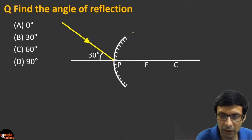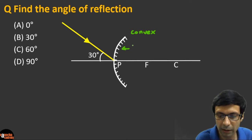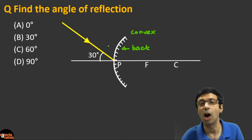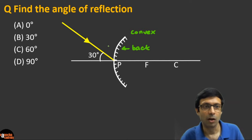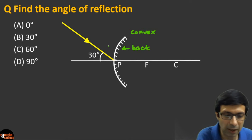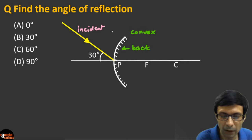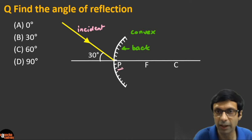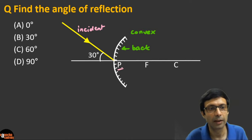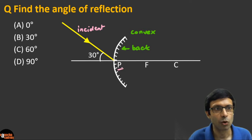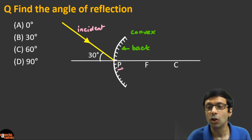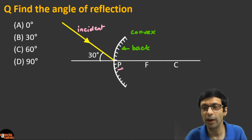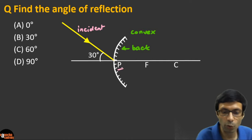First, what type of mirror is this? As you can see, this is a convex mirror — the back non-reflecting side is visible, and the reflecting side is bulging outwards. Now, the incident ray is hitting the pole P of the mirror at an angle of 30 degrees. Think about which rule to apply here — this is a spherical or convex mirror question.